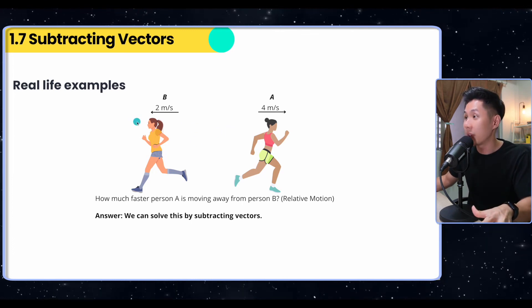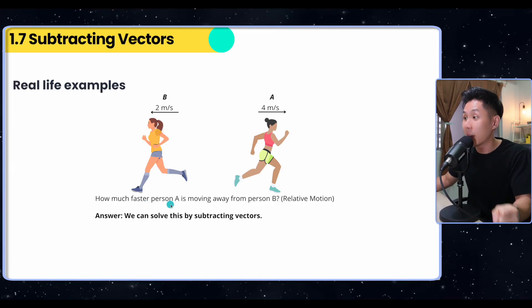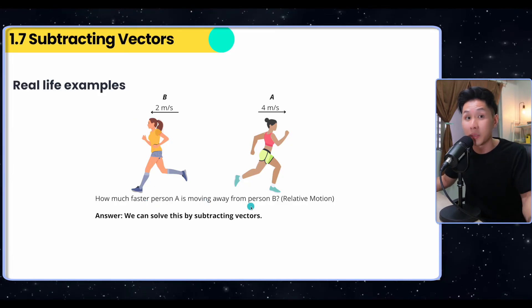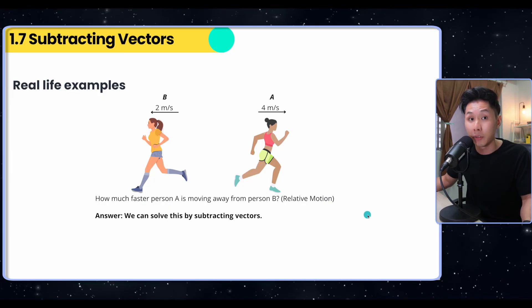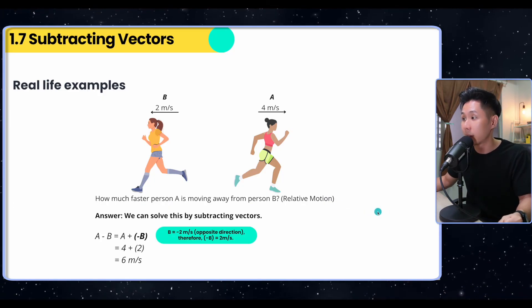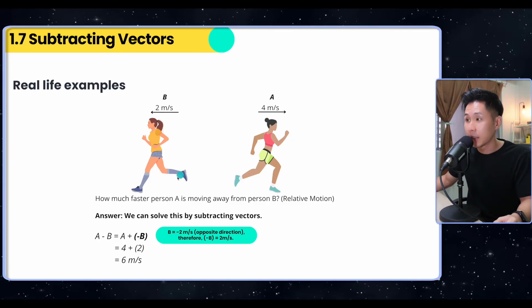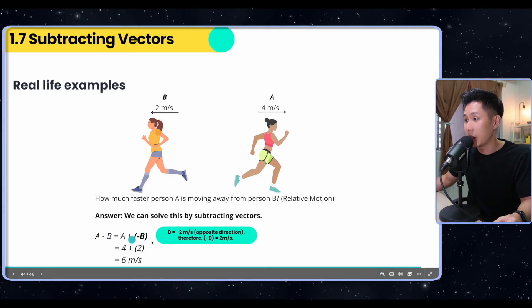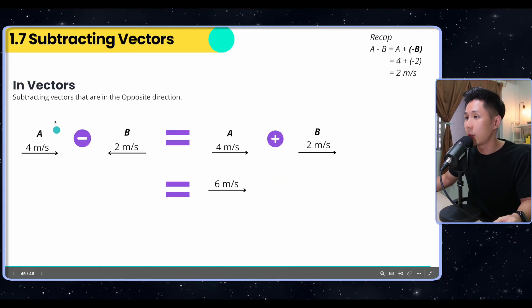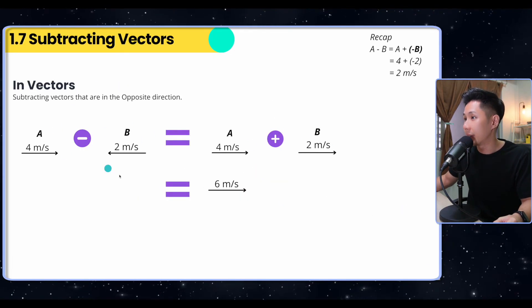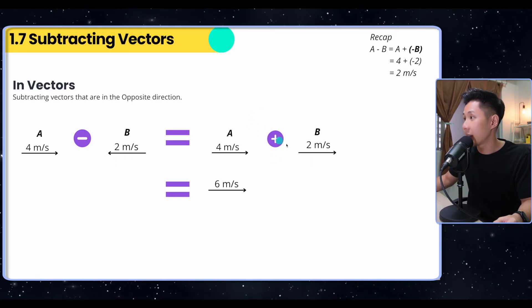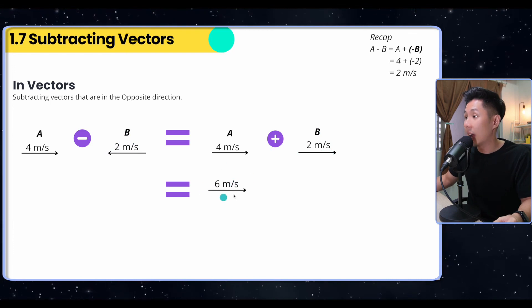This is another example where subtracting vectors can be handy. Let's say A and B are moving away from each other this time. The question is: how much faster is person A moving away from person B? That's a little bit of relative motion. We can again solve this by subtracting vectors. Because they are moving in different direction here, which means that the velocity will be negative. By example: 4 minus 2, but this 2 is the opposite direction. So when we're adding it up, we reverse the direction.